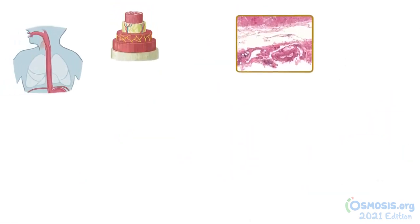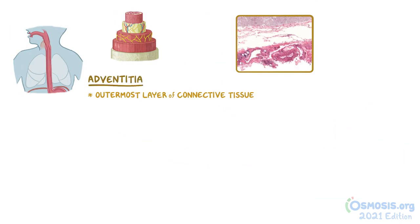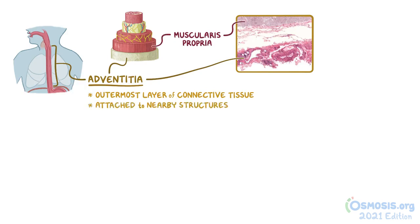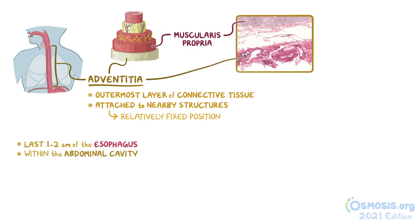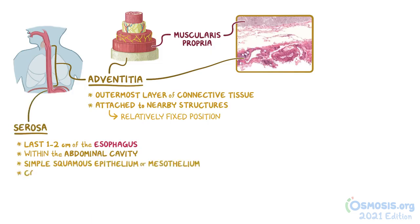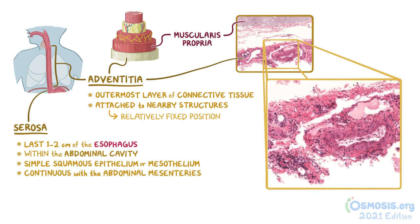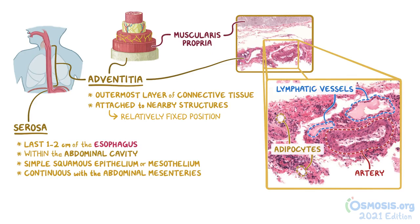The majority of the esophagus is surrounded by its outermost layer of connective tissue called the adventitia. In this image, the underlying muscularis propria can still be seen at the top. The adventitia is attached to nearby structures, such as retroperitoneal organs, which keep the esophagus in a relatively fixed position. The last 1-2 cm of the esophagus, after crossing the diaphragm, are within the abdominal cavity, and this portion has an outer layer of connective tissue called the serosa. The serosa is covered by a simple squamous epithelium, or mesothelium, that's continuous with the abdominal mesenteries. At higher magnification, we can see additional structures within the connective tissue, such as a large artery, lymphatic vessels, and adipocytes. These structures would be found in both the adventitia as well as the serosa.